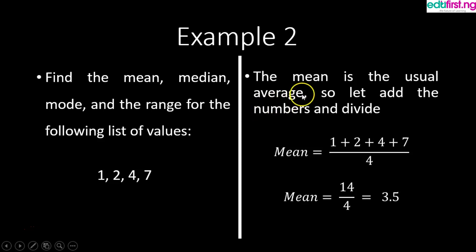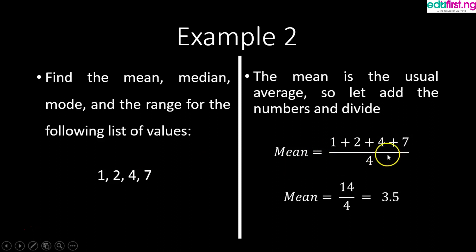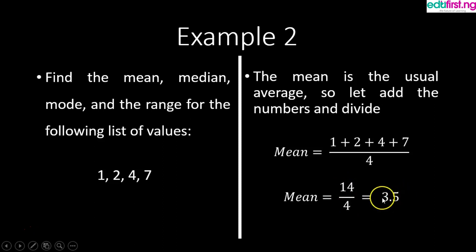To find the mean we follow the same procedure, adding the four numbers: 1 plus 2 plus 4 plus 7, divided by 4, which is the count. That gives us 14 divided by 4, which equals 3.5. So the mean can also come out as a decimal number.